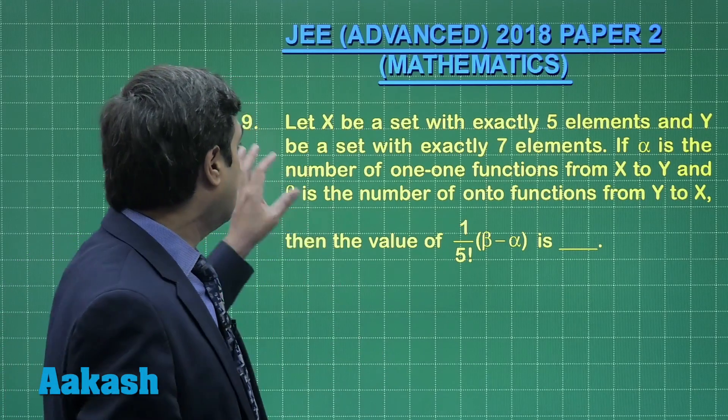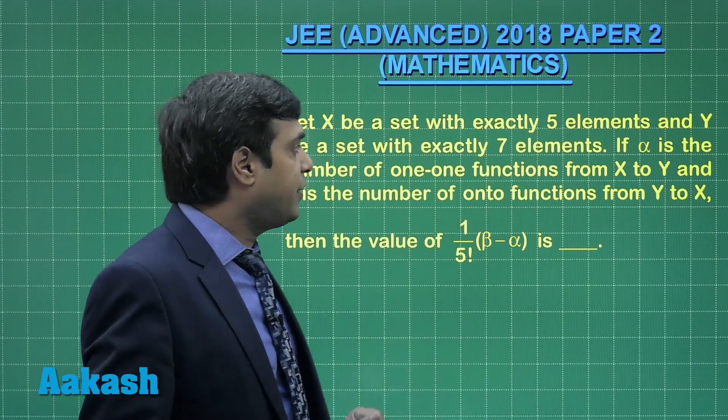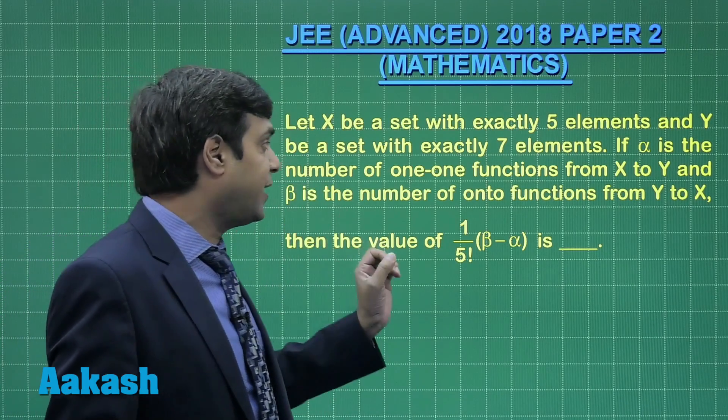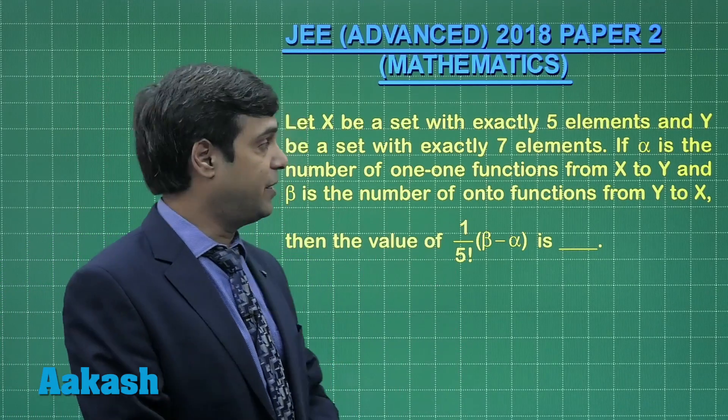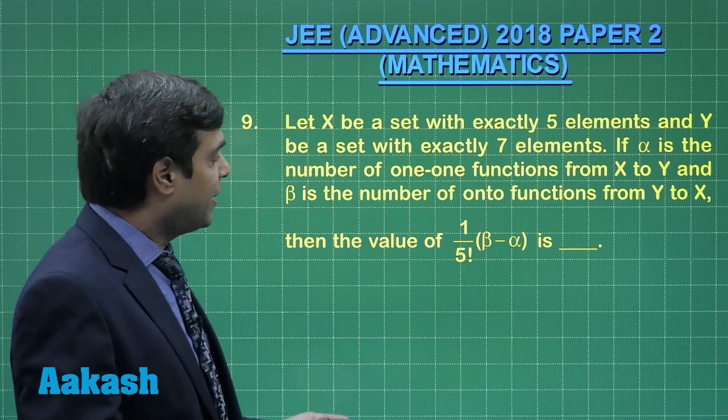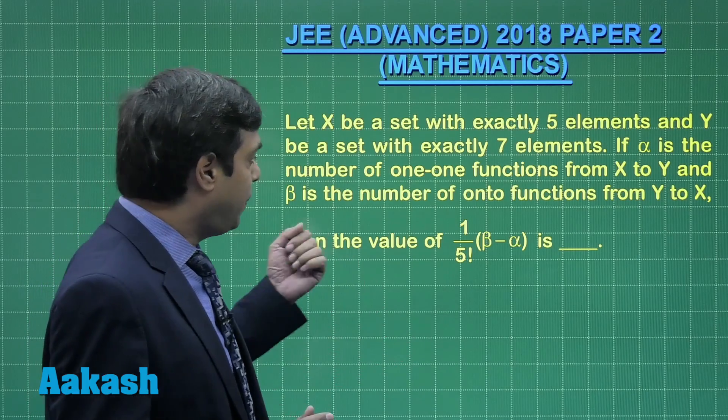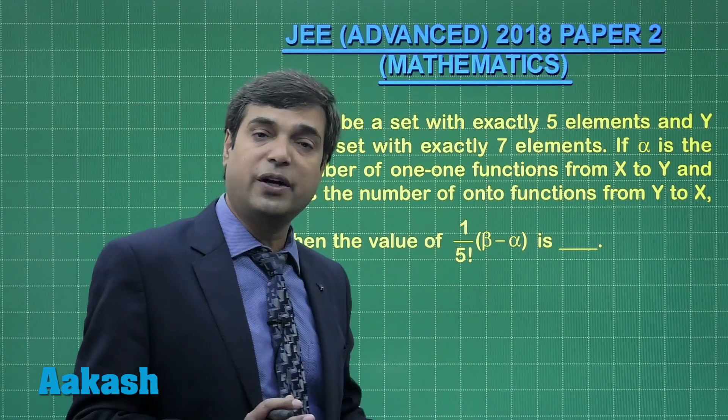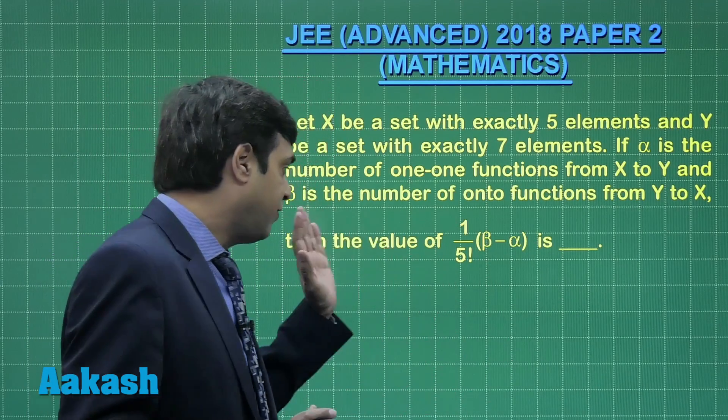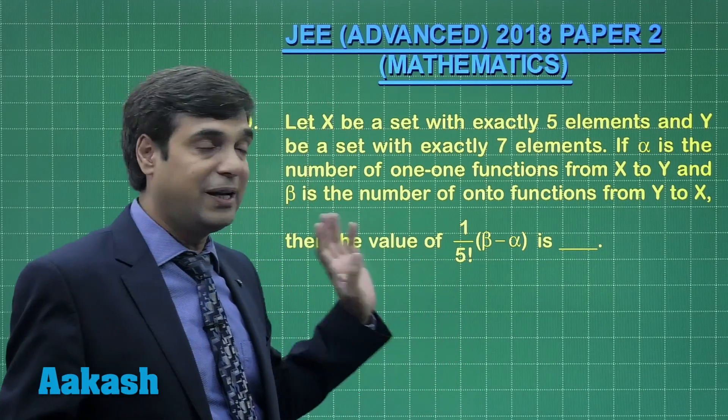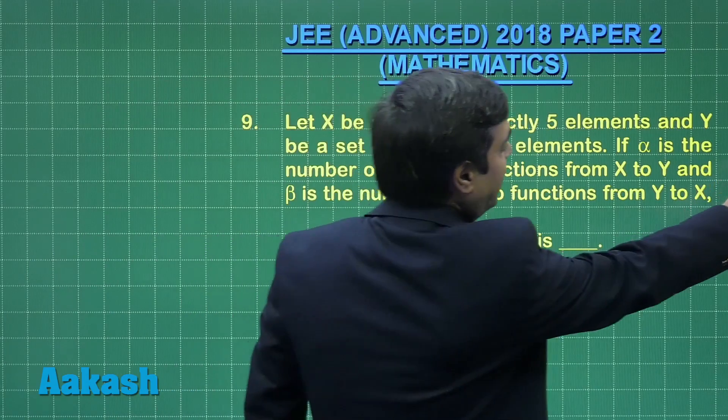Moving to question number 9, let X be a set with exactly 5 elements and Y be a set with exactly 7 elements.